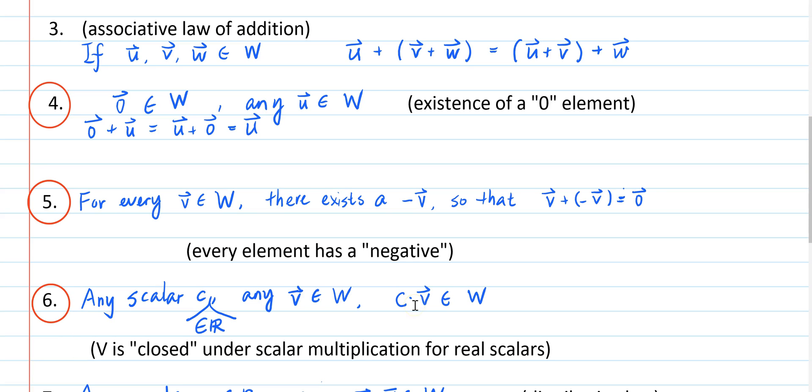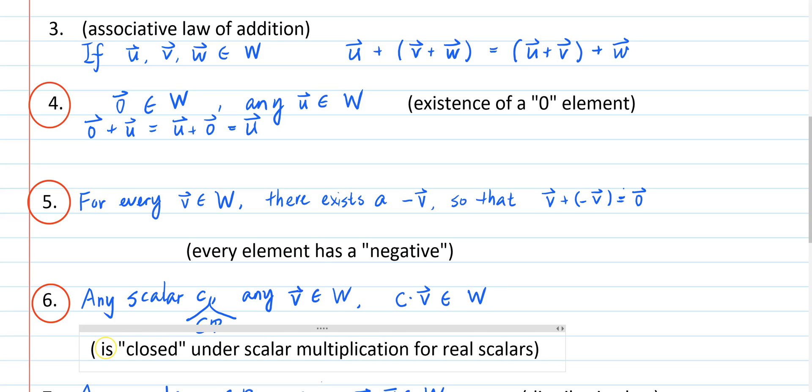That is because axiom 6 says for any scalar c that is a real number and any element v in W, the scalar multiple c times v must be in W. So W is closed under scalar multiplication.